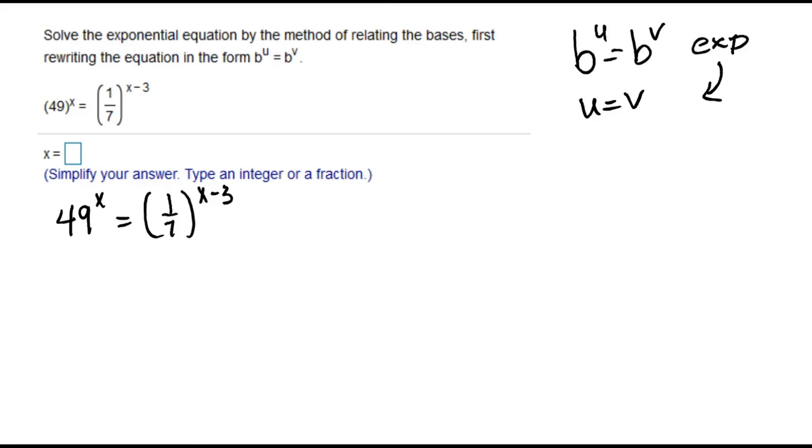You can see right now they're not the same, but hopefully you recognize that you have 1/7 and the number 49 is a power of 7. I can change 49 to be 7 squared and I can change 1/7 to be 7 to the negative 1 power. That would allow us to have the same base on both sides.